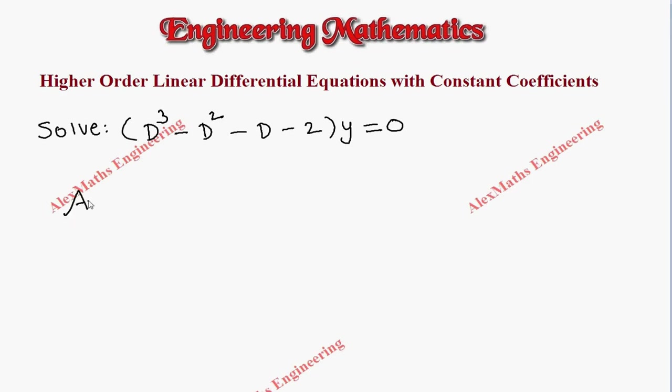As a first step, we write the auxiliary equation where we replace D with m. So m³ - m² - m - 2 = 0. On solving this using a calculator, we get the values of m.